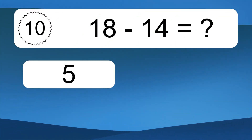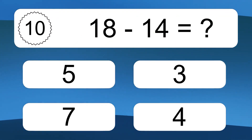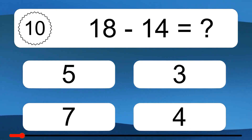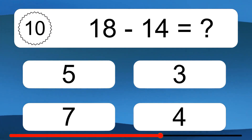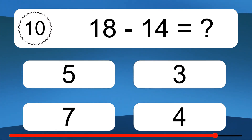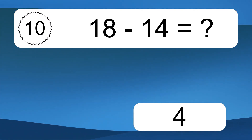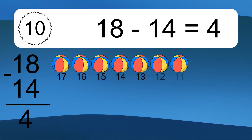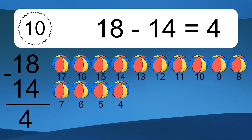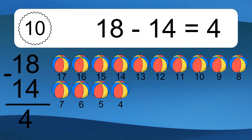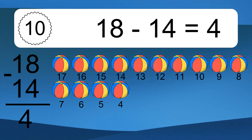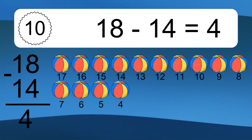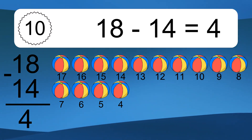18 minus 14 equals what? 18 minus 14 equals 4. Let's count it: 17, 16, 15, 14, 13, 12, 11, 10, 9, 8, 7, 6.